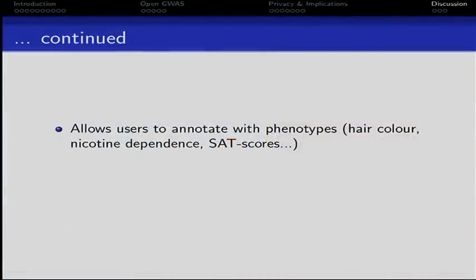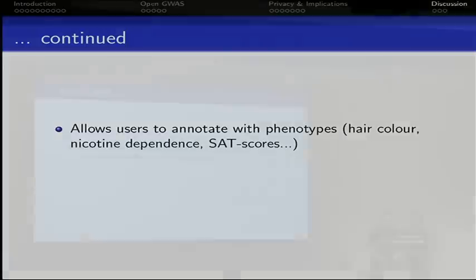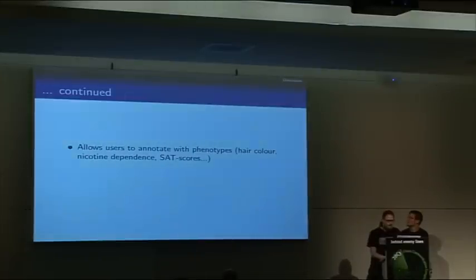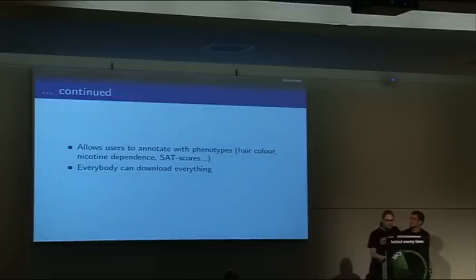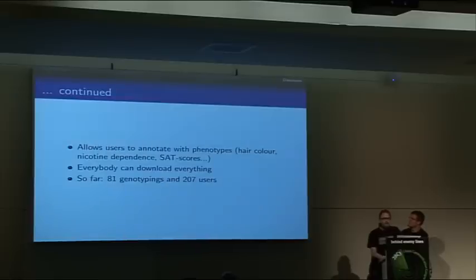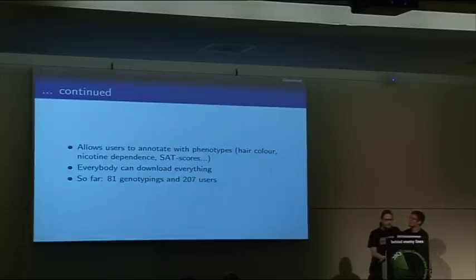People can go there and say they'd like to know your phenotypic information about SAT scores, and people already do enter their test results from high school, or on nicotine dependence, hair colour, stuff like this. There's also disease risk information and family history of cancer. Everybody can download everything — the only thing kept from everybody is the email addresses and passwords of users. So far we have 81 genotypings and 27 users. We said we would need 1% of 23andMe's customers — that would be 1,000 users — and we have 8% of that so far, with numbers rising.